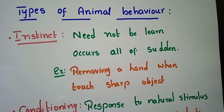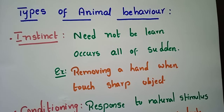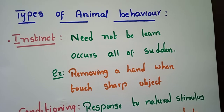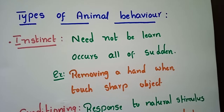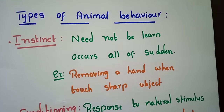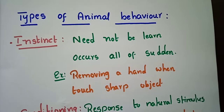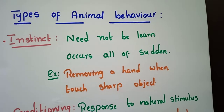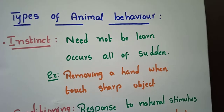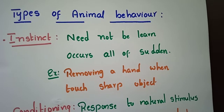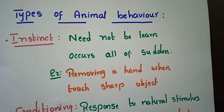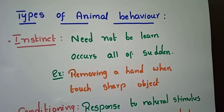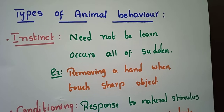Hi to everyone, this is Kuzma. Welcome to Happy Learning. Now, we are going to learn some important key points about types of animal behavior. Very very important bits: instinct behavior, conditioning behavior, imprinting behavior and imitation behavior.